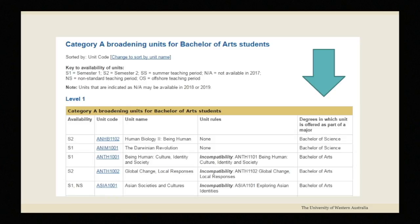The furthest column on the right indicates what degree the unit comes from so you can ensure that you don't include more than two category A units from within your degree.